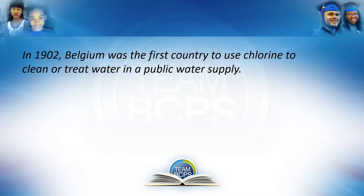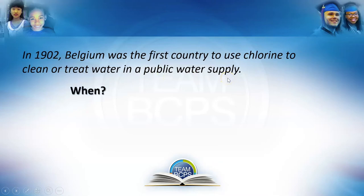Have a look at this sentence — we learned about it in the last lesson. In 1902, Belgium was the first country to use chlorine to clean or treat water in a public water supply. So when did this happen? 1902.